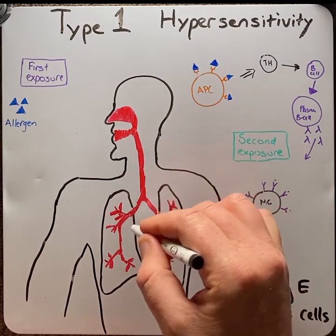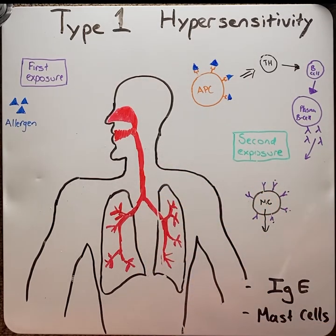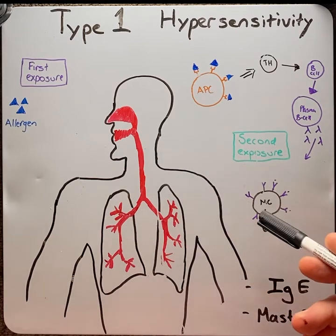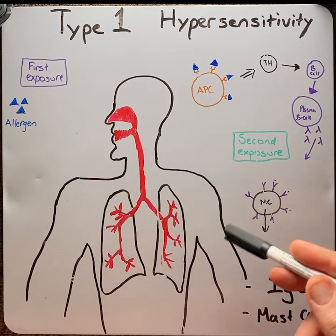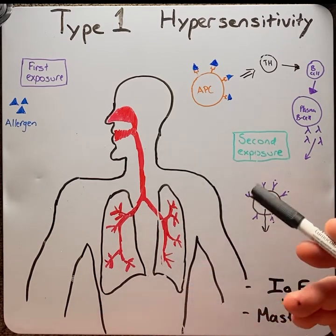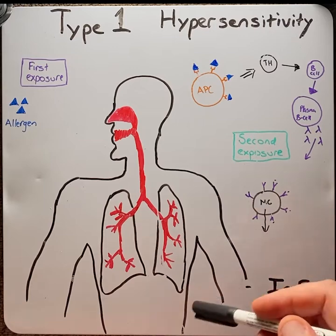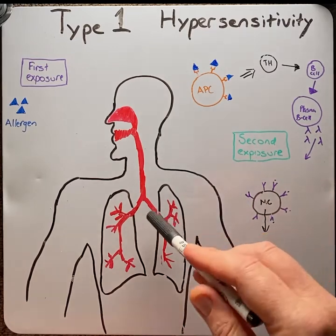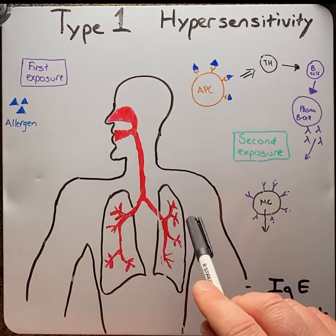Histamines are released into the tissue, causing an inflammatory reaction leading to vasodilation, increased vascular permeability or edema, itchiness, pain, and bronchoconstriction.